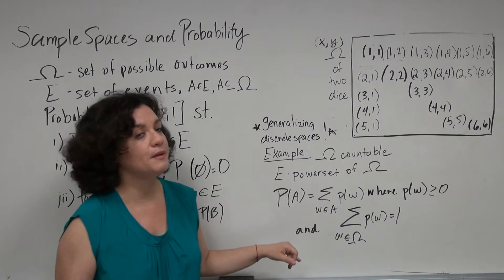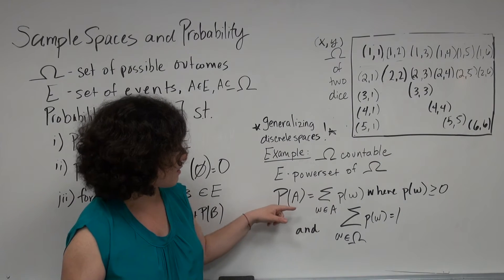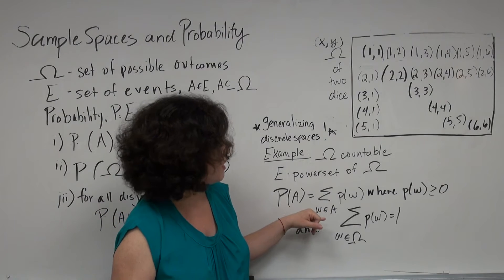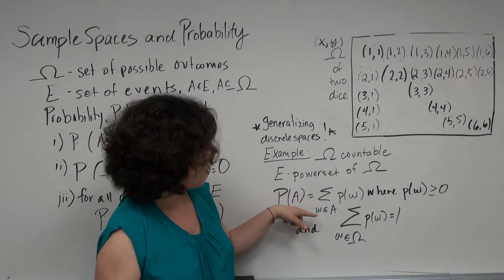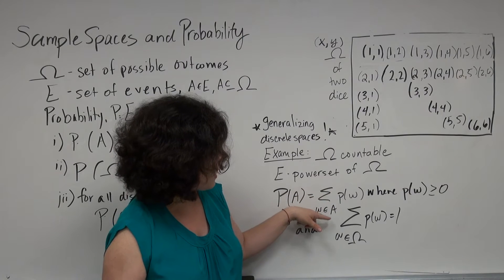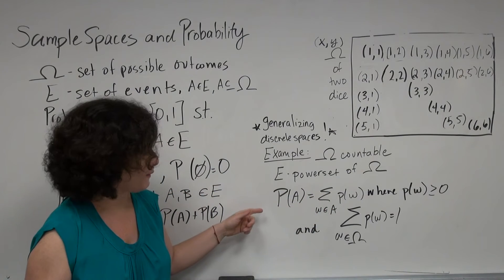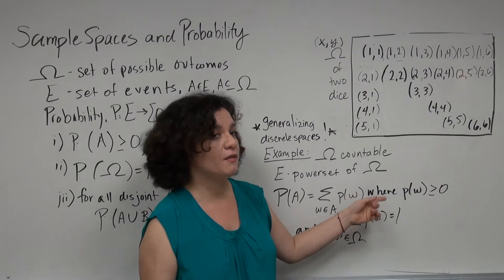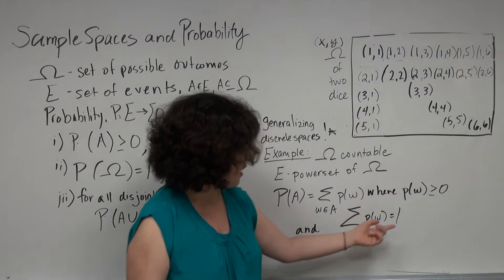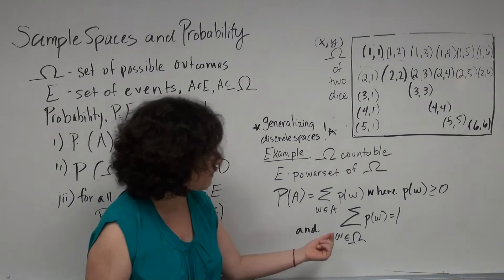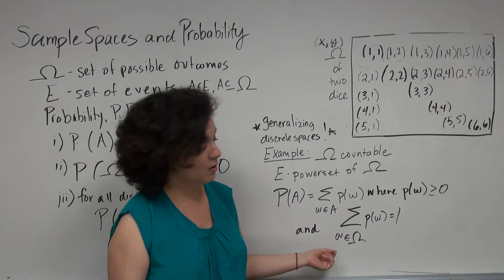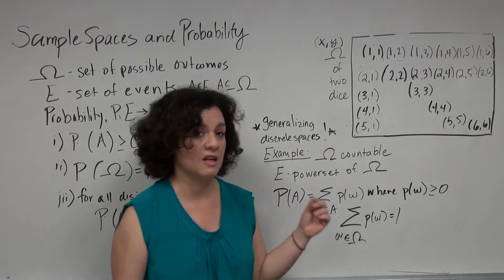To define the probability, for a single event A, we take the sum of the probabilities of all the outcomes (little omega) in event A. The probability of each point in the sample space is non-negative, and when we consider the entire sample space, the sum of all outcomes equals 1.